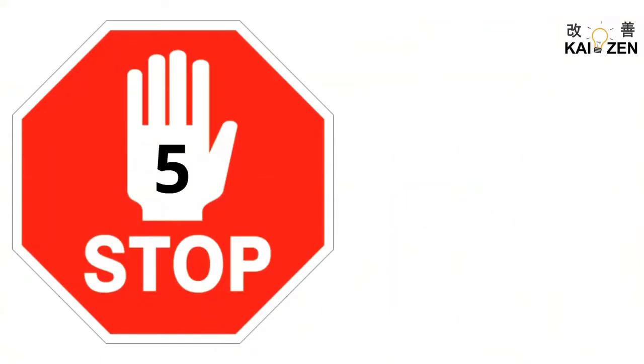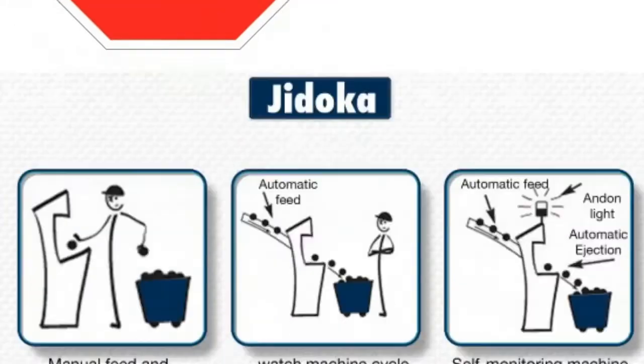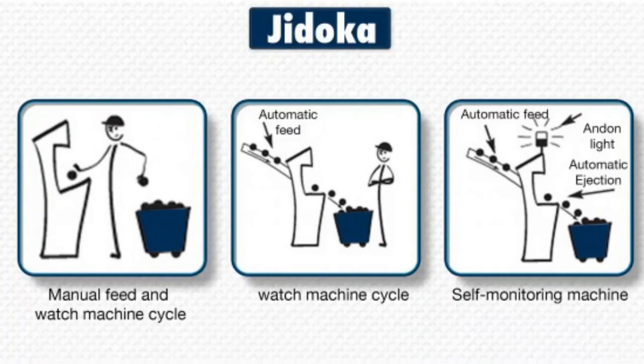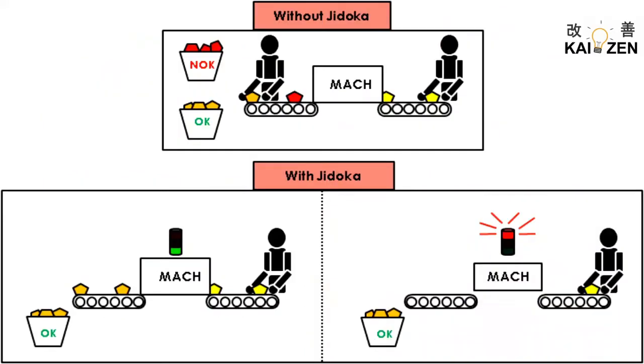Principle 5: Build a culture of stopping to fix problems to get quality right the first time. Toyota believes that it is best to solve problems even if the work suffers in the short term. Problem solving should not be postponed. Toyota believes that in the long term, productivity improves when you do this.